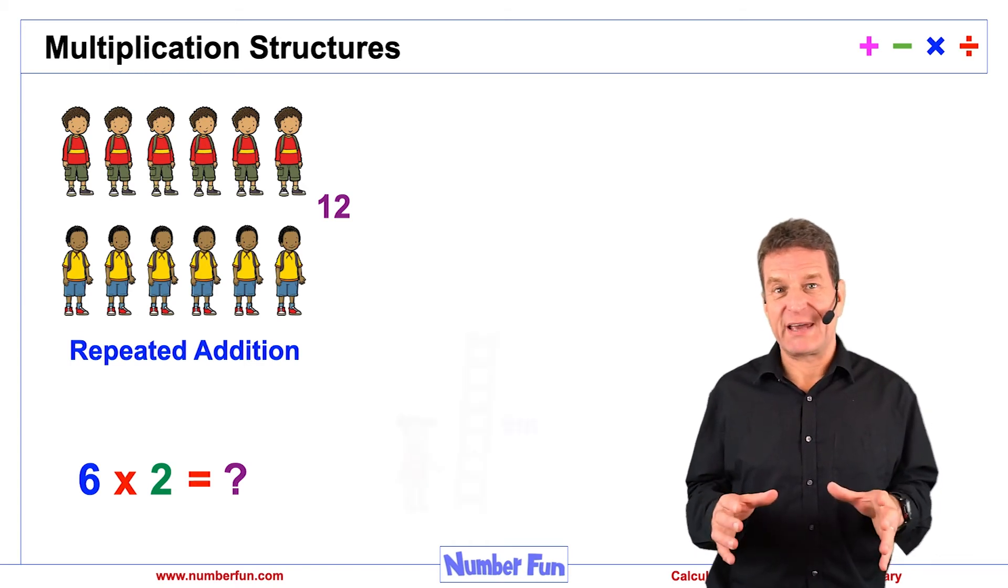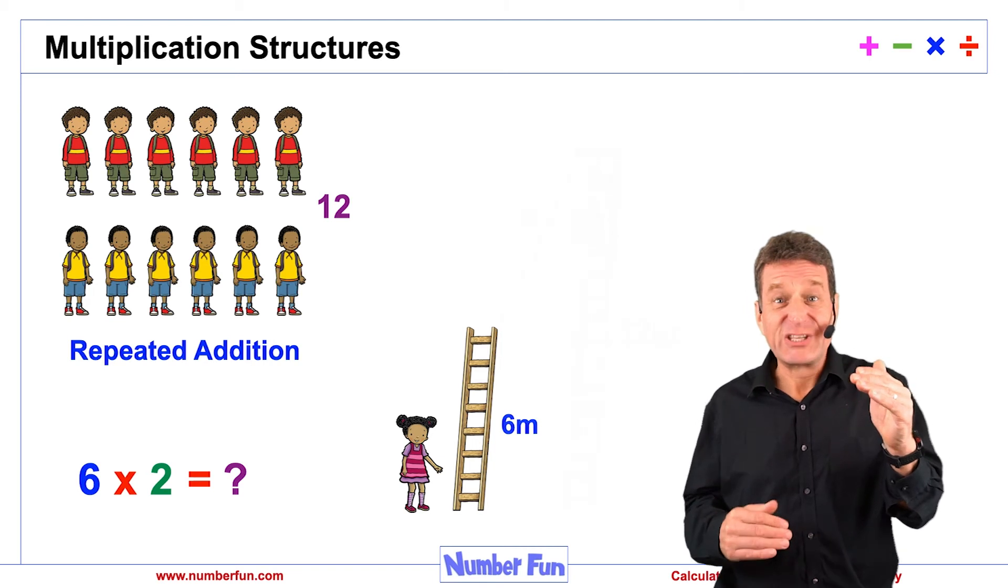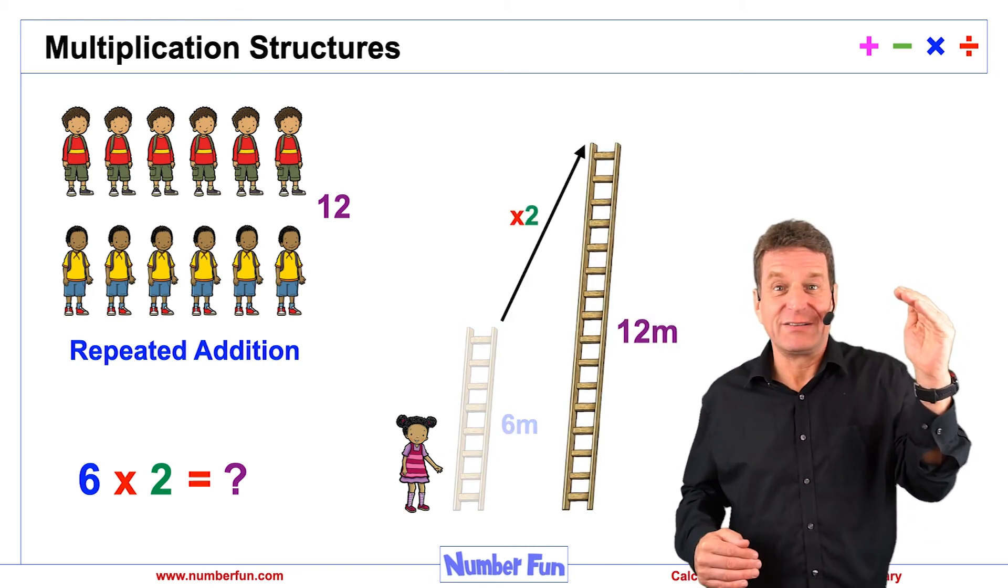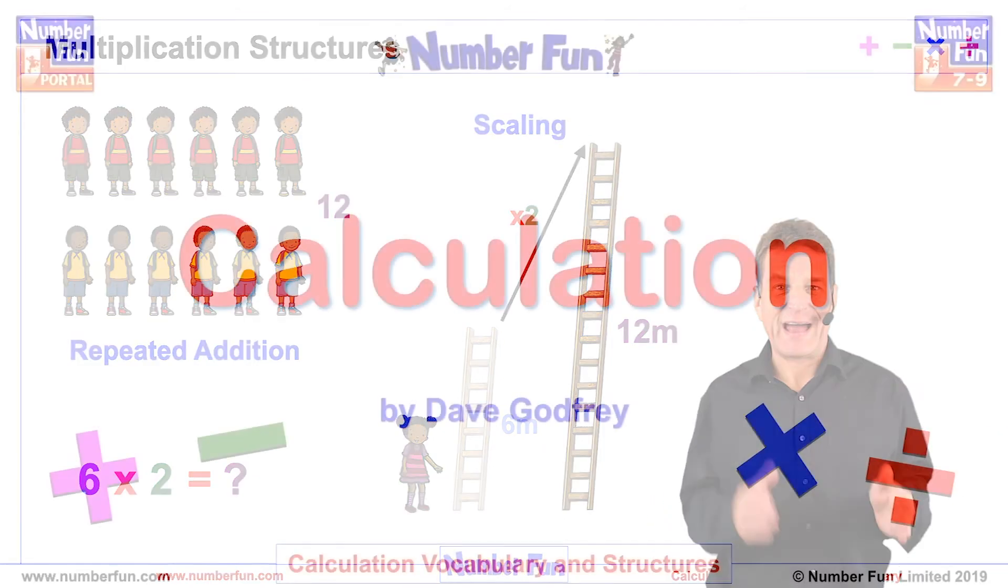And the second picture is scaling. So if I had a 6 meter ladder and then I doubled its length, it would be scaled to 12 meters. Repeated addition and scaling.